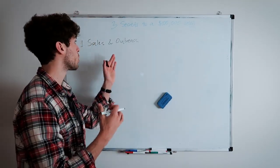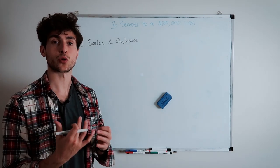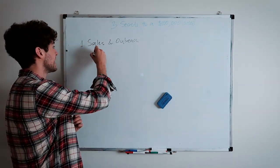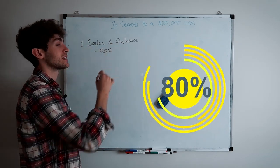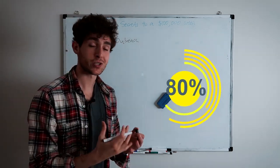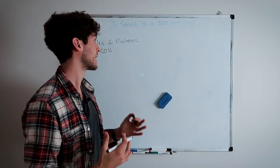The first thing that we're going to want to master to take our agency to the next level is sales and outreach. And there's a few things that you want to keep in mind when you're going about your sales and your outreach for your agency. The first thing is that you want to spend 80% of your time on this component, on this aspect of your agency, especially when you're just starting out and you don't have many clients under your belt.